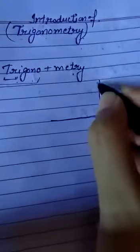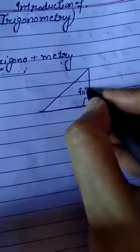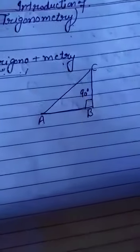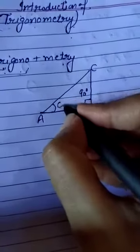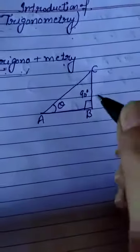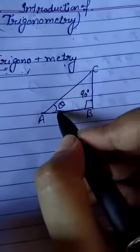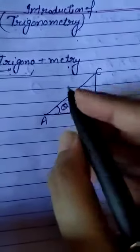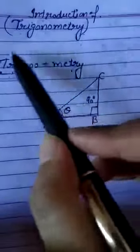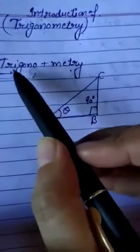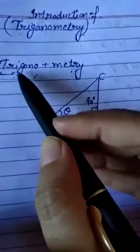Suppose that we are having a triangle and it is a right angle triangle. Obviously, if it is a right angle triangle, it means one angle should be 90 degrees. I am going to suppose that my angle B is 90 degrees, and this is my acute angle and I am going to give the name theta. Now, by using theta, when I am going to find out the value of the sides of the triangle, I am going to use the concept of trigonometry.